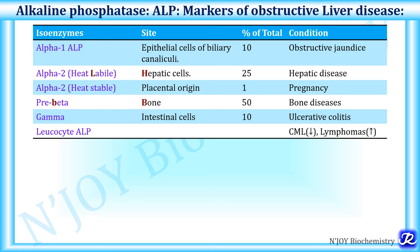Alkaline phosphatase (ALP) is the marker of obstructive liver disease or cholestasis. There are various isoenzymes: alpha-1 (present in epithelial cells of biliary canaliculi, increased in obstructive jaundice), alpha-2 heat-labile (present in hepatic cells, increased in hepatic diseases), alpha-2 heat-stable (of placental origin, increased in pregnancy), pre-beta (bone fraction, increased in bone diseases), gamma (present in intestinal cells, increased in ulcerative colitis), and leukocyte ALP (increased in lymphomas, decreased in chronic myeloid leukemia).